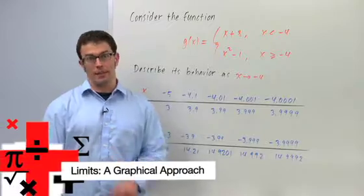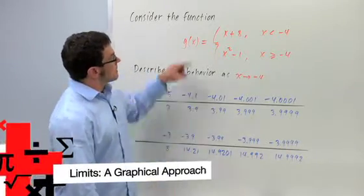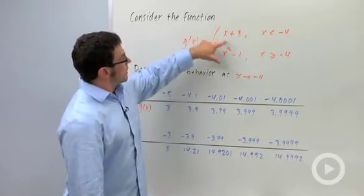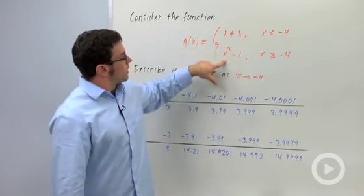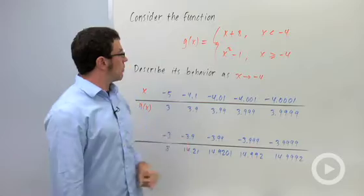I want to talk about one-sided limits. Here's a function: g of x equals—and it's piecewise defined—x plus 8 for x less than negative 4, and x squared minus 1 for x greater than or equal to negative 4.